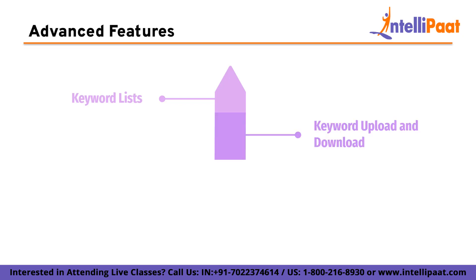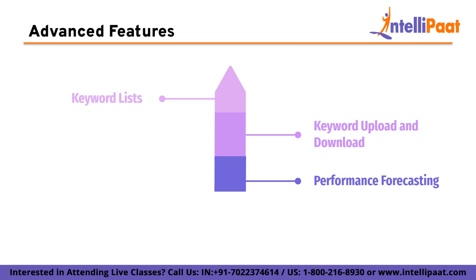Second is keyword upload and download. If you have a large list of keywords that you want to research, you can upload them to Keyword Planner to get data on their search volume and competitiveness. You can also download your keyword list to CSV files for further analysis. Third is performance forecasting. Keyword Planner can provide performance forecasts for your ad campaigns based on different bid amounts. This can help you estimate how many clicks and impressions you might get at different budget levels and optimize your campaigns accordingly.